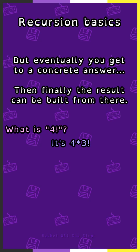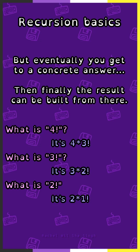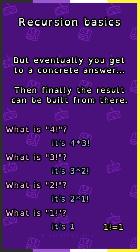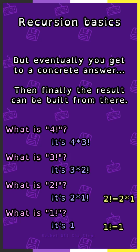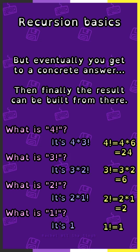Then finally the result can be built from there. Going back: four factorial is four times three factorial, three factorial is three times two factorial, two factorial is two times one factorial, and one factorial is one. So one factorial is one, two factorial is two times one which is two, three factorial is three times two which is six, four factorial is four times six which is 24.